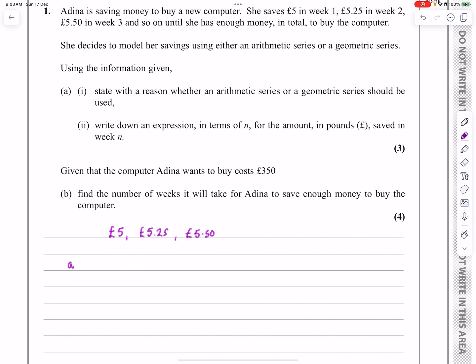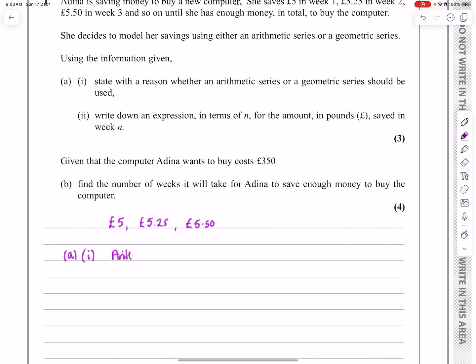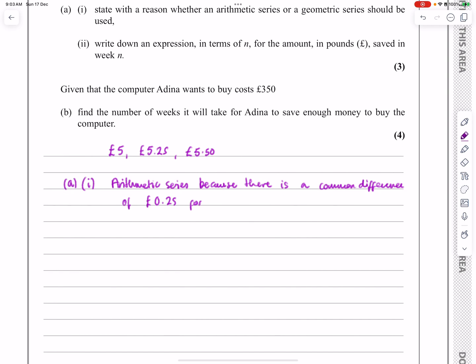And A part one says, what sort of series is it? Well, it's an arithmetic series because there's a common difference of 25 pence each time. So let's just explain that to the examiner. So the answer is arithmetic series. Probably the easiest way to say it is just because there is a common difference of £0.25 for each subsequent term.